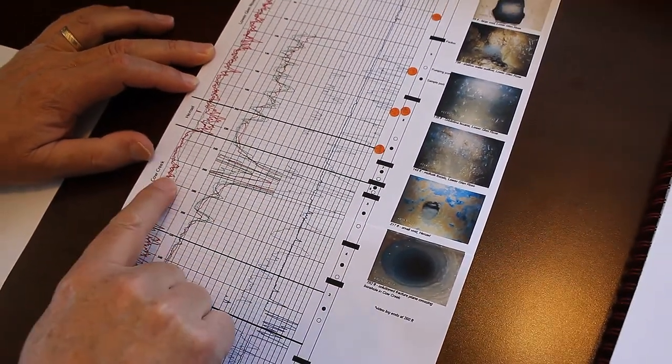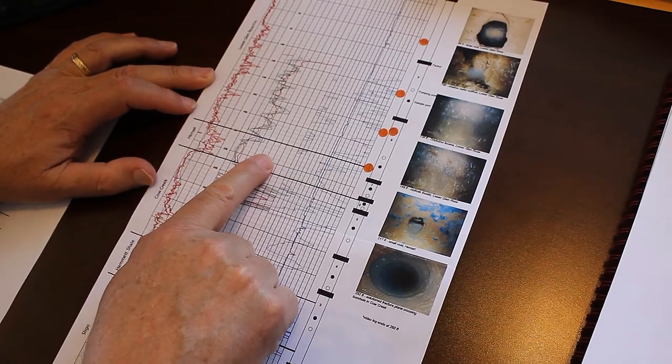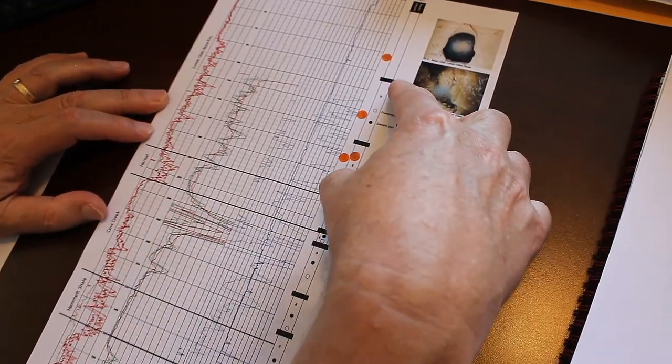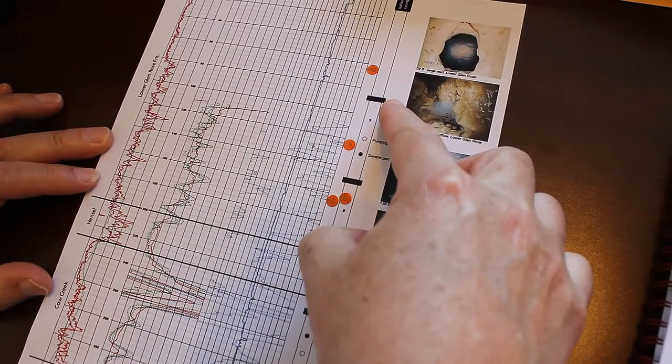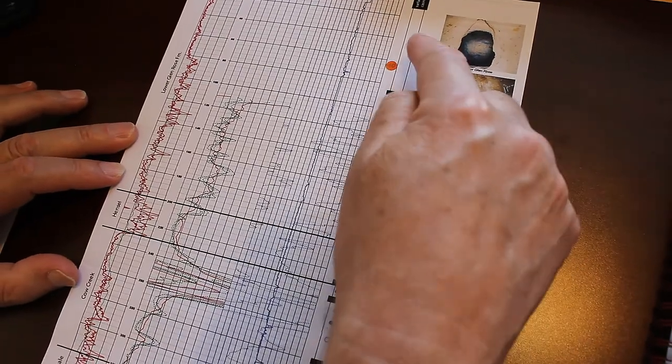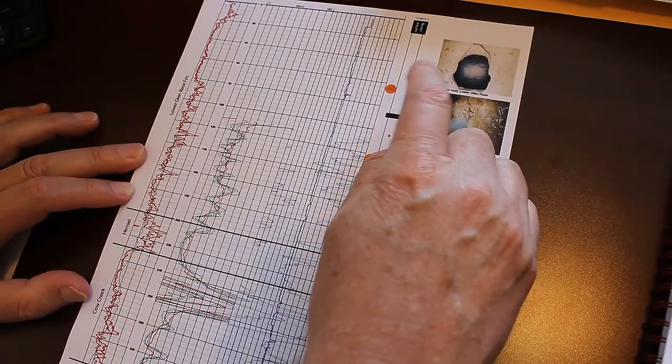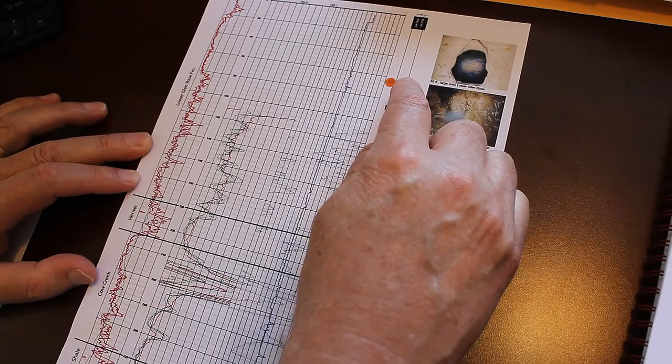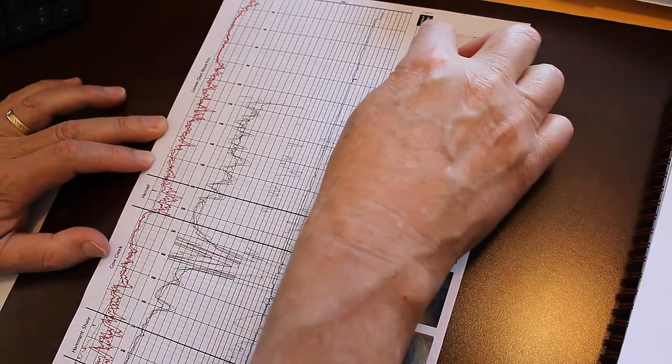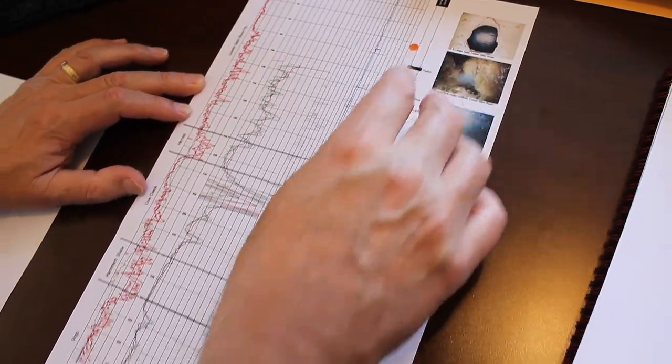Then we have several zones within the Cow Creek, one zone in the Hensel formation, two zones, two standard zones in the Lower Glen Rose formation. And zone number 10 is not actually a West Bay multi-port zone, it's a standard monitor well zone.